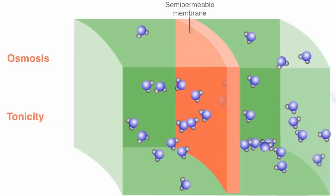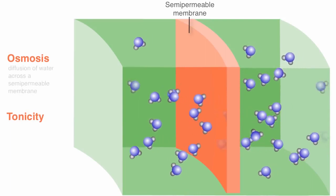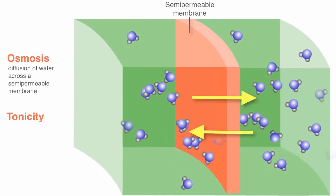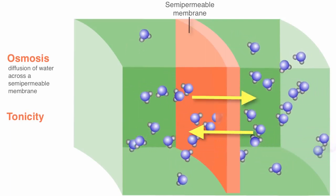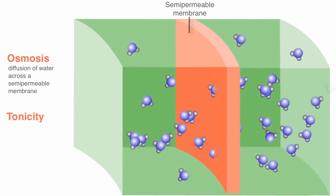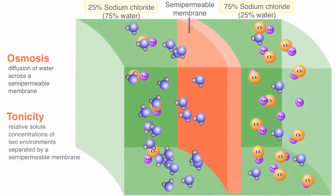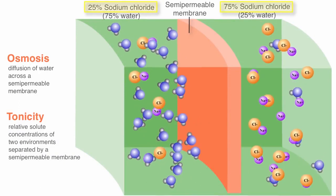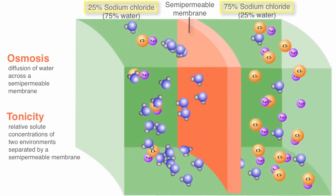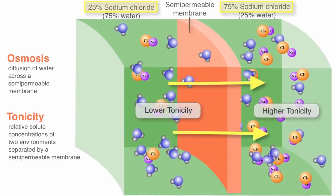Before we take a look at how osmosis and tonicity affect a cell, let's review what each of these terms means. Osmosis represents the diffusion of water across a semi-permeable membrane. The term tonicity refers to the relative solute concentration of two environments separated by a semi-permeable membrane. In other words, by comparing the tonicity of the solutions, you can determine the direction in which osmosis will occur.